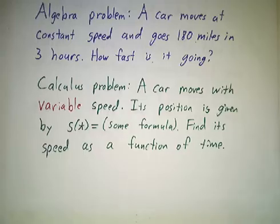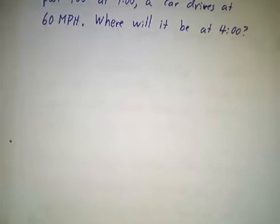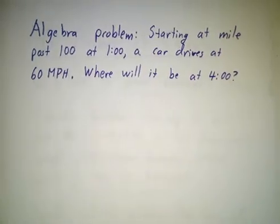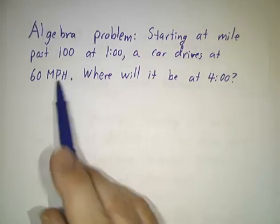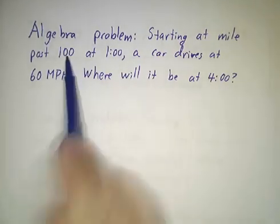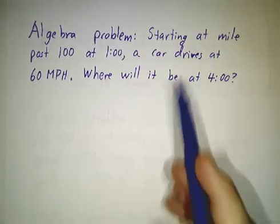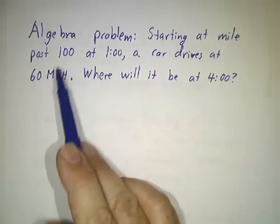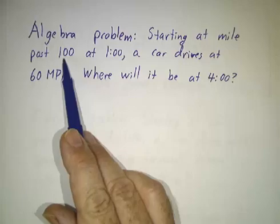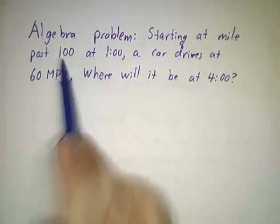Another problem might be the reverse. See, before we used distance and had to figure out speed. An algebra problem might say, you're going at 60 miles an hour. From 1 o'clock to 4 o'clock, you start at mile post 100. Where do you wind up? And you say, 3 hours times 60 miles an hour is 180 miles. Start at mile 100. You must wind up at mile post 280. Or maybe you're going the opposite direction. But let's suppose you're going the direction of mile post 280.